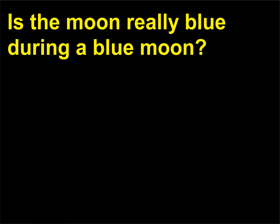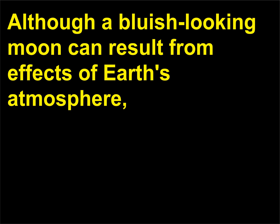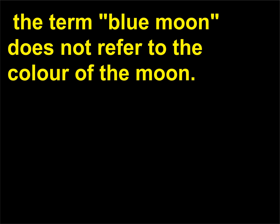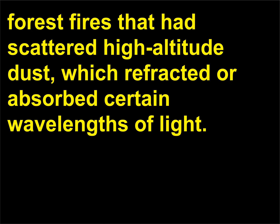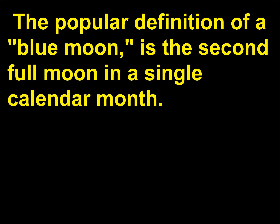Is the moon really blue during a blue moon? Although a bluish-looking moon can result from effects of Earth's atmosphere, the term blue moon does not refer to the color of the moon. For example, the phenomenon was widely observed in North America on September 26, 1950, due to Canadian forest fires that had scattered high-altitude dust, which refracted or absorbed certain wavelengths of light. The popular definition of a blue moon is the second full moon in a single calendar month.